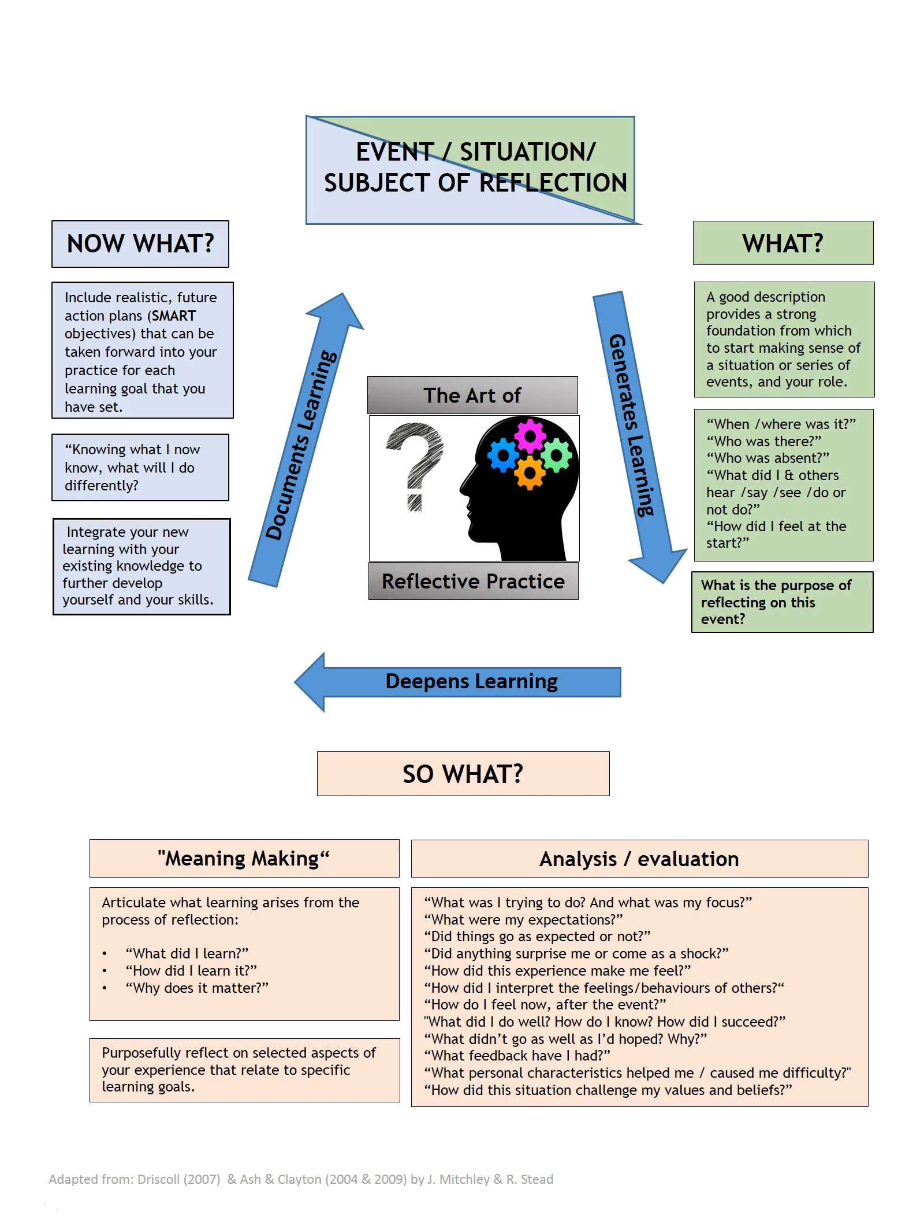Our resource is split into three sections, which are based on the three key questions in our cycle of reflection. Those questions are what, which is a description of the event, so what, which is making sense of what happened in the event, and now what, which is our action plans based on what we've learnt and what we're going to do in the future.